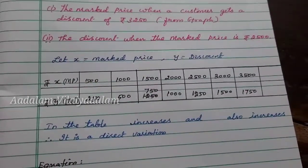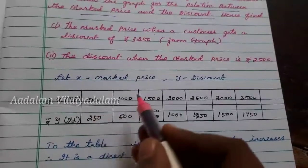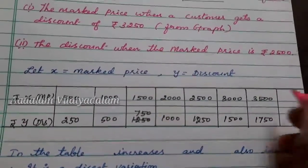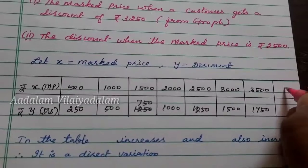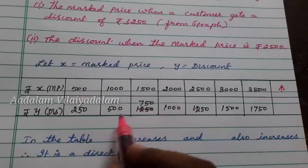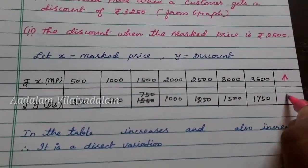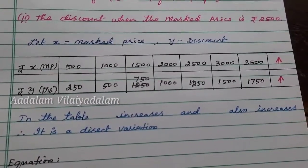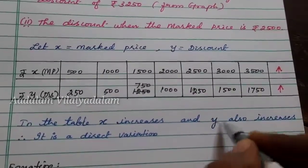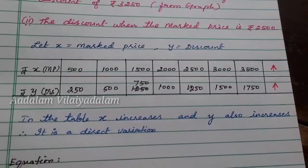In the table, one value increases and another value also increases. The x values — 500, 1000, 1500, 2000, 2500, 3000, 3500 — are increasing. The y values — 250, 500, 750, 1000, 1250, 1500, 1750 — are also increasing. So in the table, x increases and y also increases. Therefore, it is a direct variation.